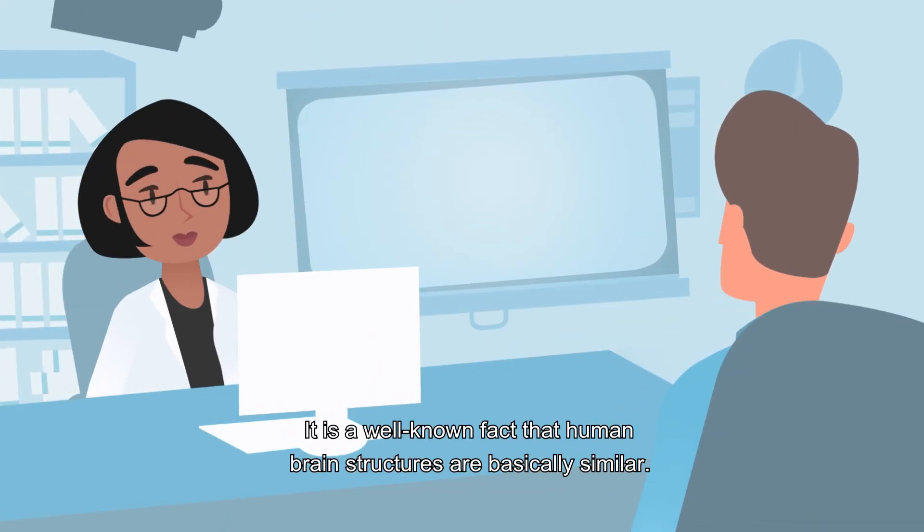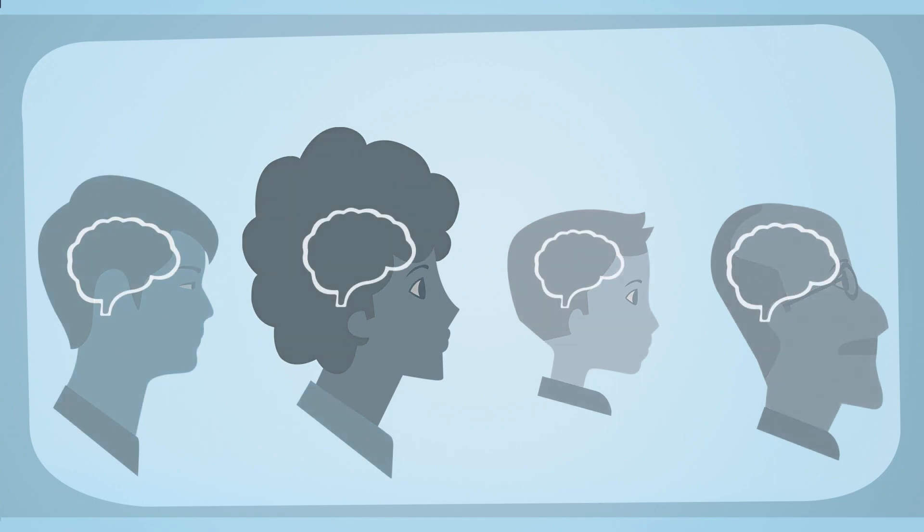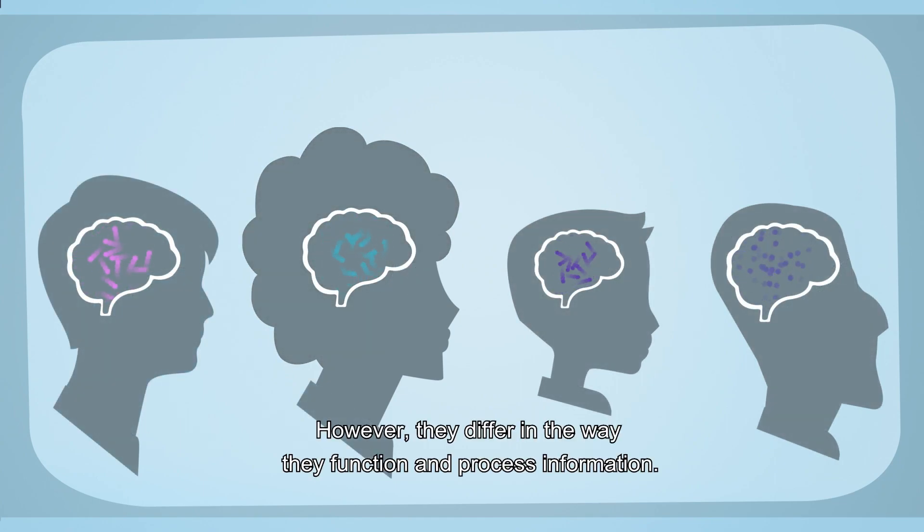It is a well-known fact that human brain structures are basically similar. However, they differ in the way they function and process information.